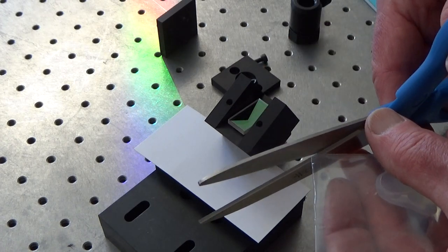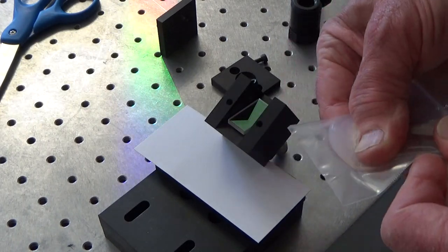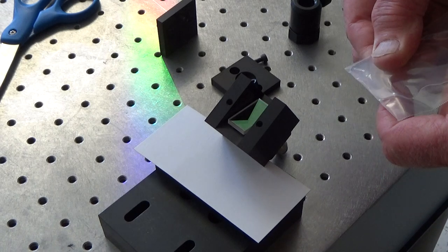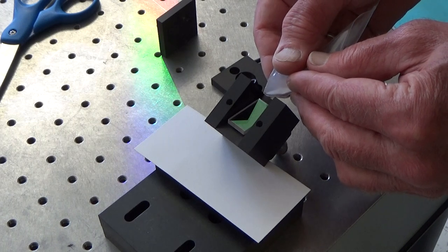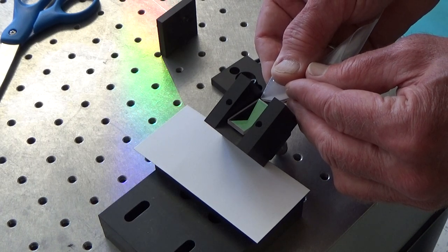Cut a small hole so I can squeeze out just a small amount of the silicon paste to affix the thin film polarizer in the mount.